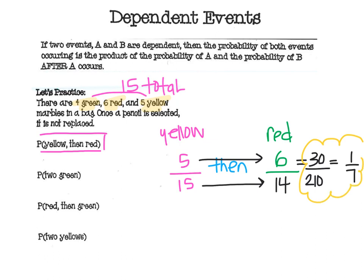Either 30 over 210 or one seventh is the answer, but one seventh is simplified. To recap: there were five yellows out of 15 total. I kept it, so there are only 14 marbles left. I look and see there are six reds. Make your two fractions and multiply going across.